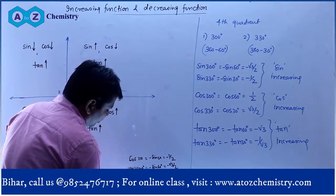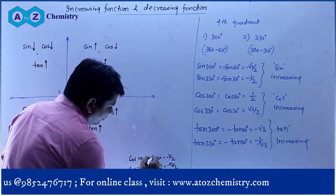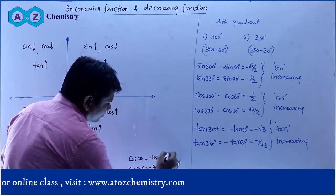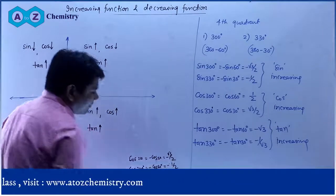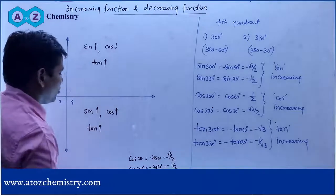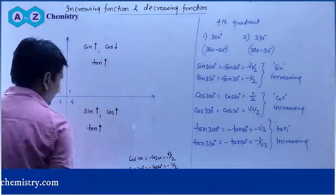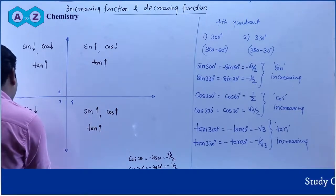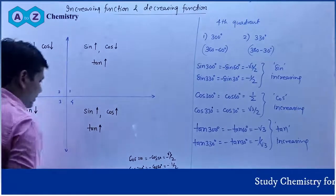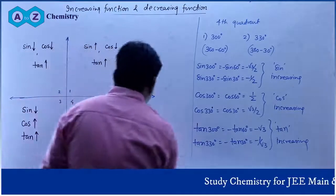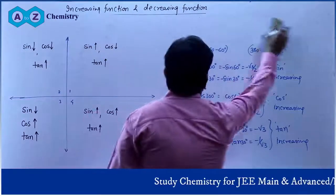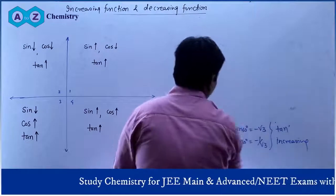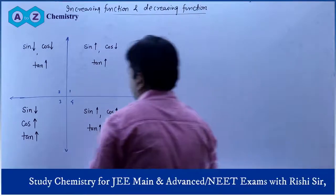Aap dekh sakte ho ki third quadrant mein cos 210° = -cos 30° = -√3/2 aur cos 240° = -cos 60° = -1/2. Values -√3/2 se -1/2 badhi, isliye cosine is an increasing function in the third quadrant. So hum conclusion draw kar sakte hain ki kis quadrant mein kaun sa function increasing hai aur kaun sa decreasing hai.